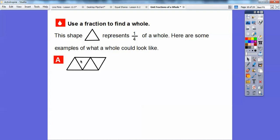See how there's 4 of them right here? 1, 2, 3, 4. So, this is 1 fourth of it. Or, it could look like this. See? Here's 4 triangles. 1, 2, 3, 4.